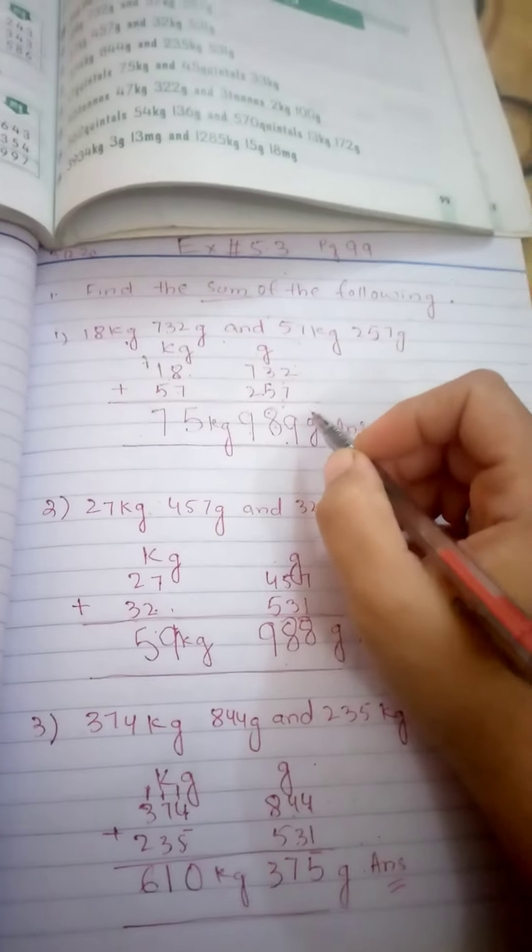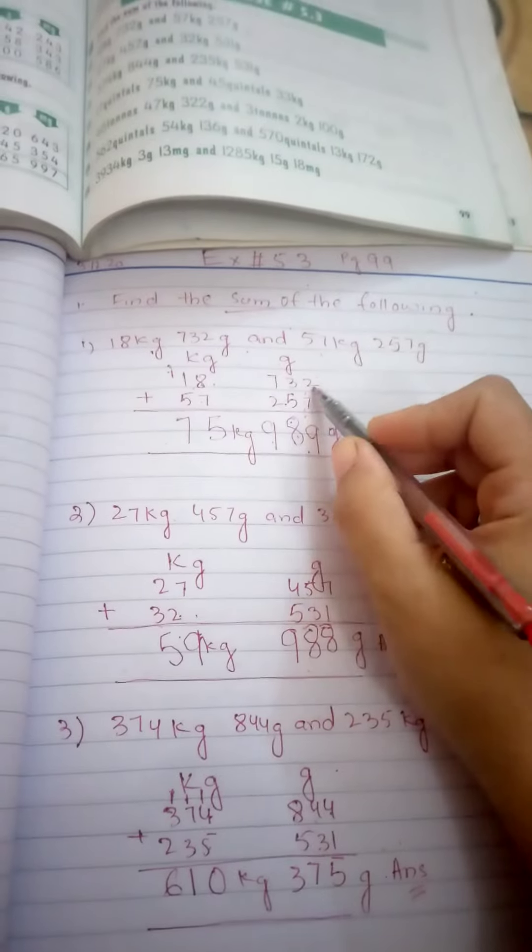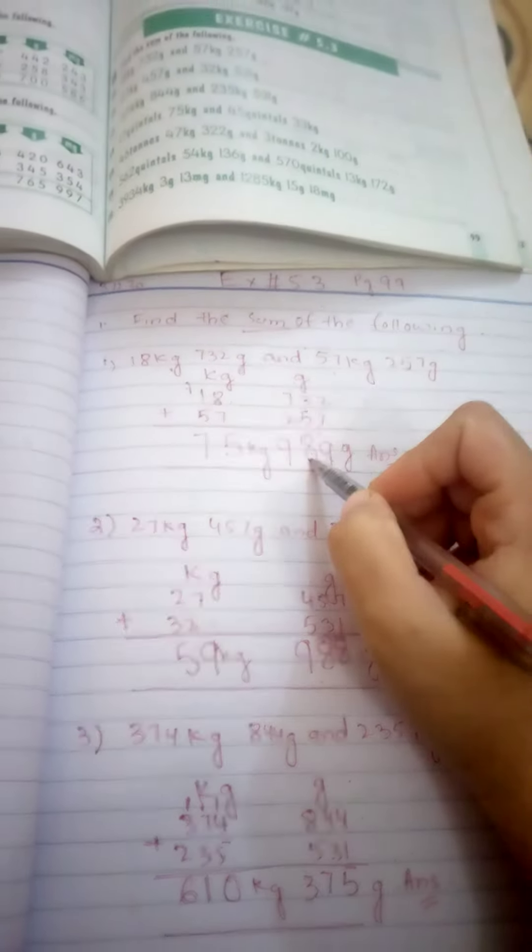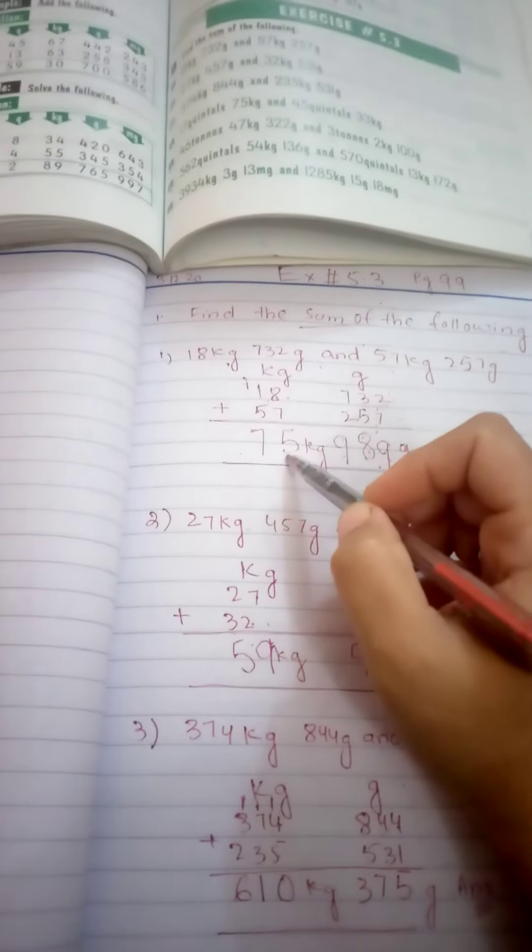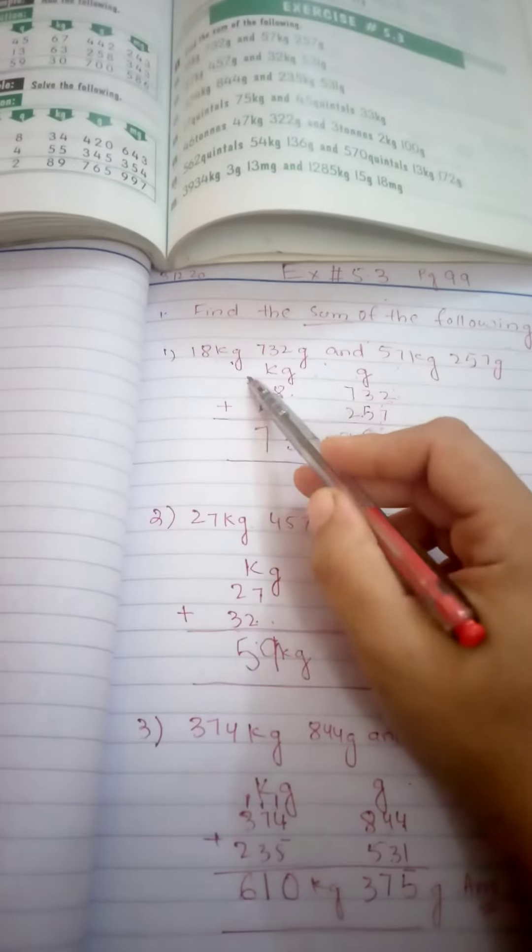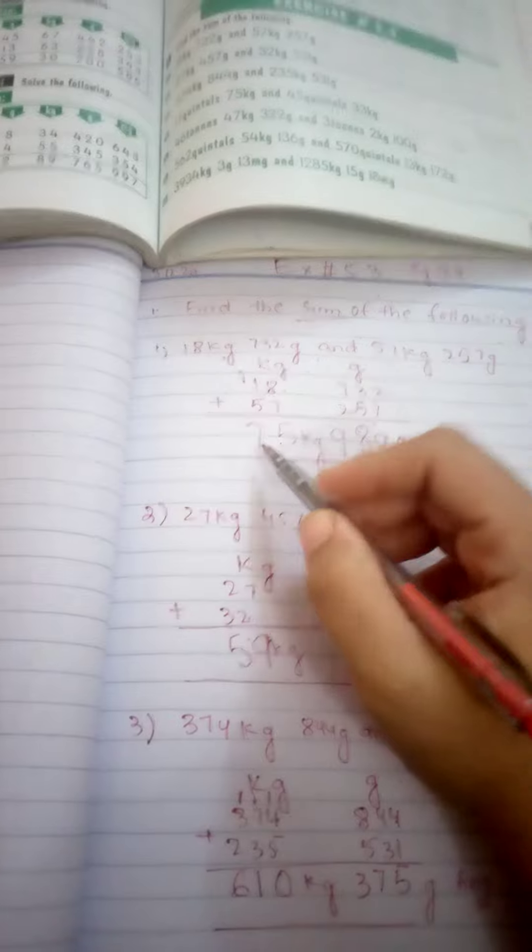Whenever we start addition or subtraction, we start with the right hand side. First, 2 plus 7 is 9, 3 plus 5 is 8, 7 plus 2 is 9. 8 plus 7 is 15, so we write 5 here and 1 is carried over. 5 plus 1 is 6, and 1 carry is 7.